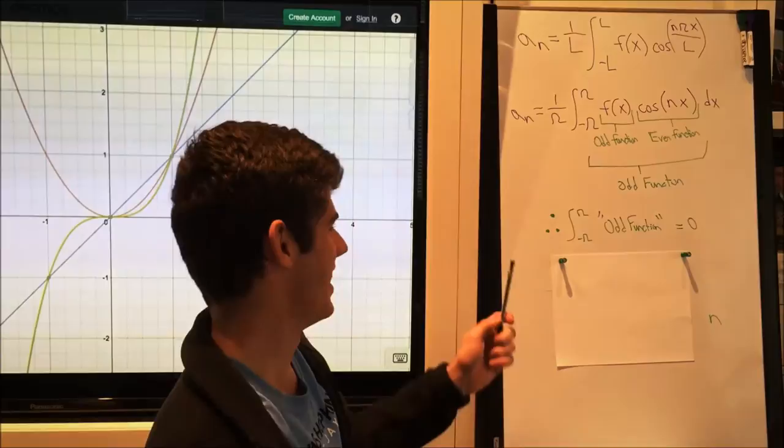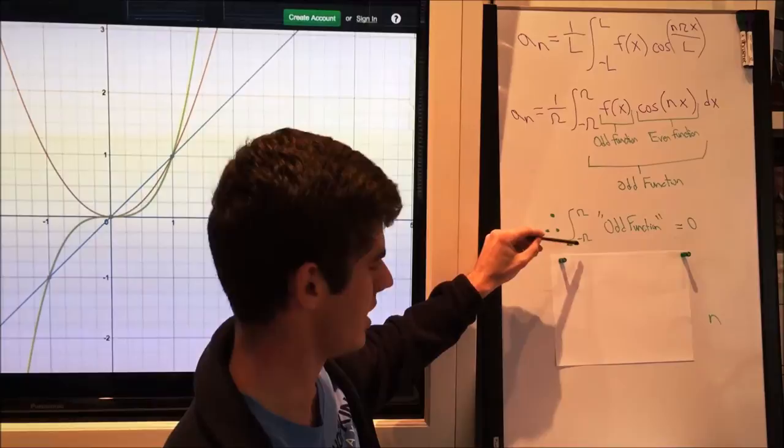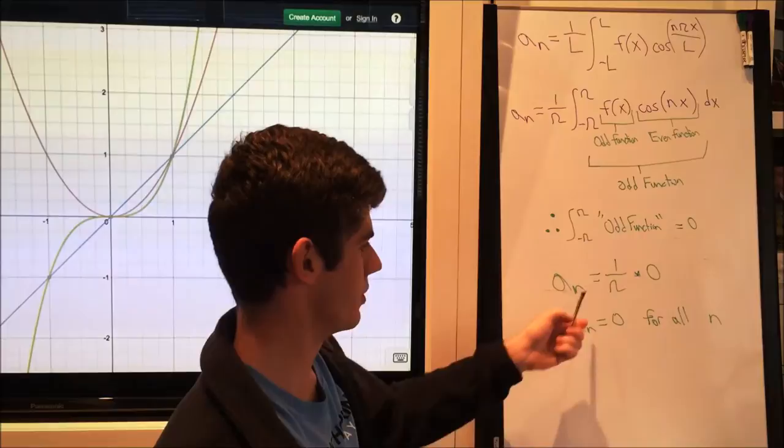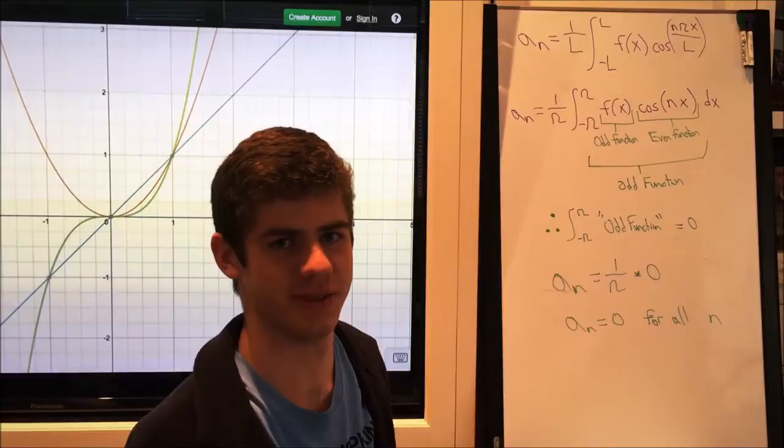Thanks Sean, and because of that, this function now from the interval of negative π to π of an odd function will just equal zero, as we stated earlier, and we'll prove later. Therefore, a_n for any n will equal 1 over π times zero, which of course is just zero, and that holds true for all n's.